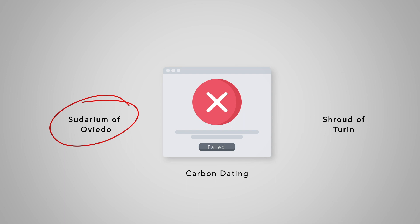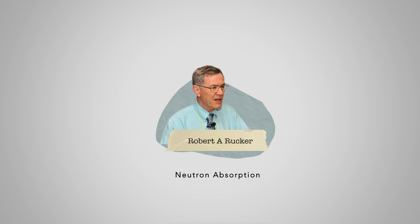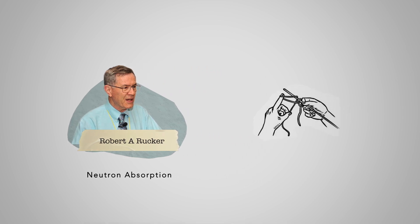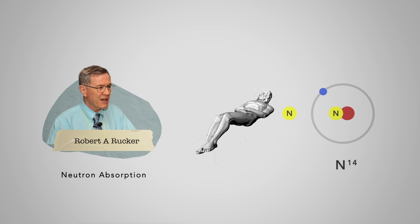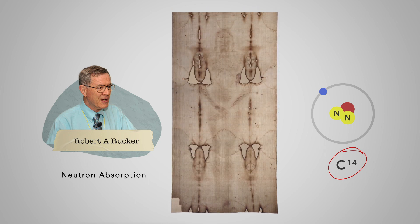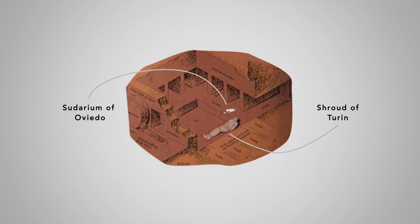This failure could possibly be explained by the neutron absorption hypothesis proposed by Robert Rucker, a retired nuclear engineer. Contrary to the reweave hypothesis, the neutron absorption hypothesis suggests that carbon atoms are altered by absorbing neutrons from radiation emitted from the body, making the carbon atoms appear much younger than they actually are. According to his hypothesis, if a sample of the Shroud closer to the body image were carbon dated, it would yield a more recent date, which could explain why both the Shroud and the Sudarium appear relatively younger than they are. While it is indeed an intriguing hypothesis, drawing any firm conclusion would require additional data and further investigation.